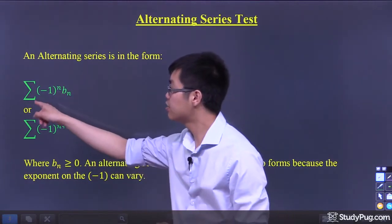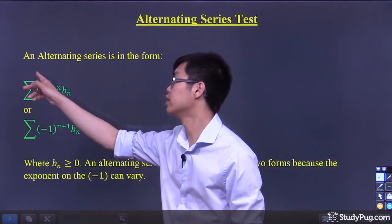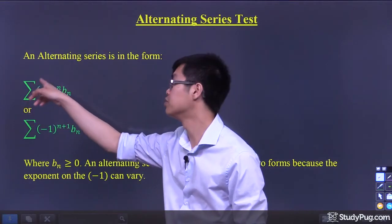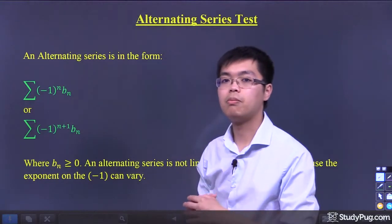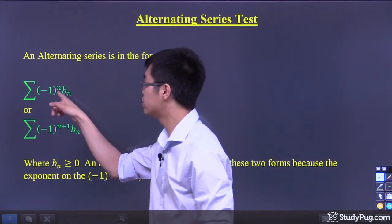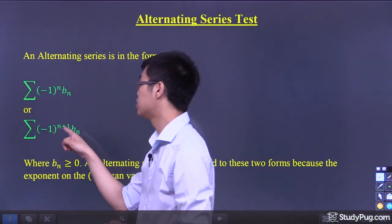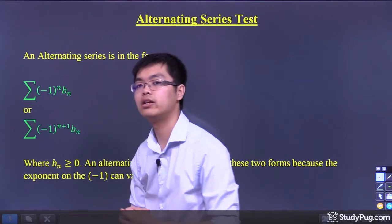You have a series that could start at n equals whatever, it could be two or three, but just make sure that it's an infinite series that goes to infinity. But the most important part is that the inside here is negative one to the power of n times b_n. It could also be negative one to the power of n plus one b_n.